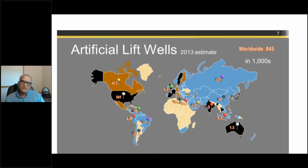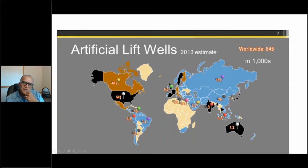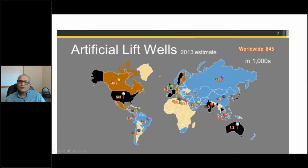This picture was put together by one service company around 2013. Based on informal surveys, the number of worldwide artificial lift wells is close to a million. Within the U.S., the number is fairly stagnant at around half a million, maybe 600,000, but around the world the number has been on the increase. We can take it that more than a million wells around the world are on artificial lift.